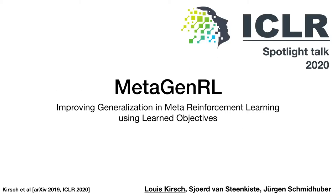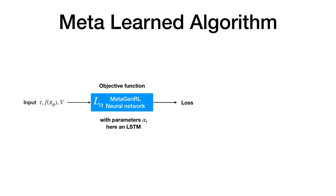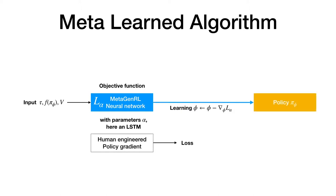So let's start with meta-general, improving generalization and meta-reinforcement learning using learned objectives. This is joint work with Schroed-Wan Stenkiste and Jürgen Schmidhuber, which appeared at ICLR. In this work, we represent our learning algorithm similar to human-engineered variants. We define an objective function L parameterized by an LSTM that produces a loss. Some of the inputs depend on the policy parameters, such as the predicted action distribution or the hidden state. And this allows us to learn the policy using the objective function by backpropagation. A policy gradient, for example, is in the space of learnable algorithms. Here, the subset of inputs required would be the rewards and action log probabilities.